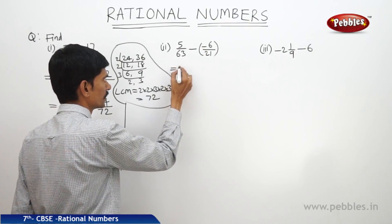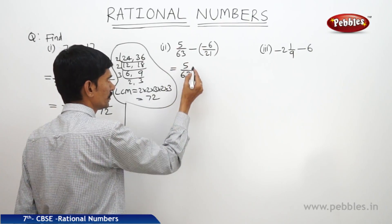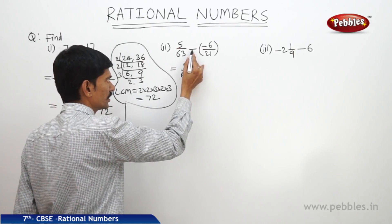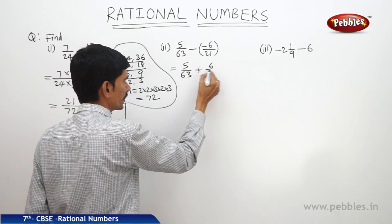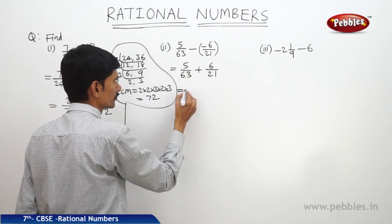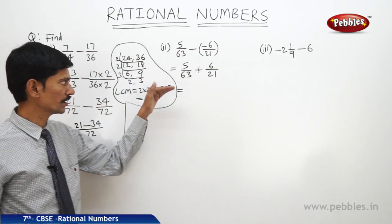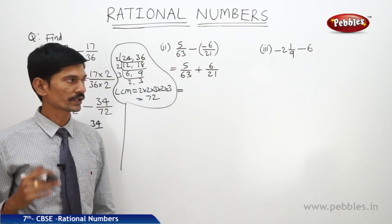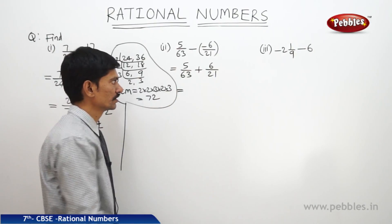Here 5 by 63, same. Then if you multiply minus half, minus becomes plus, so it becomes plus 6 by 21. Now the denominators are not equal, so first you should make the denominators equal. For that, find the LCM of the denominators.